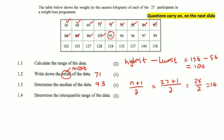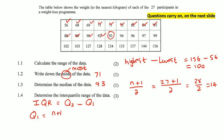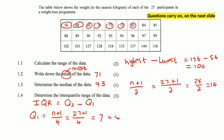Determine the interquartile range. The IQR is Q3 minus Q1. To find Q1, the lower quartile, you use (n+1)/4. That's (27+1)/4 = 28/4 = 7. That's the position, not the answer. Going to position 7 gives us Q1 = 82.